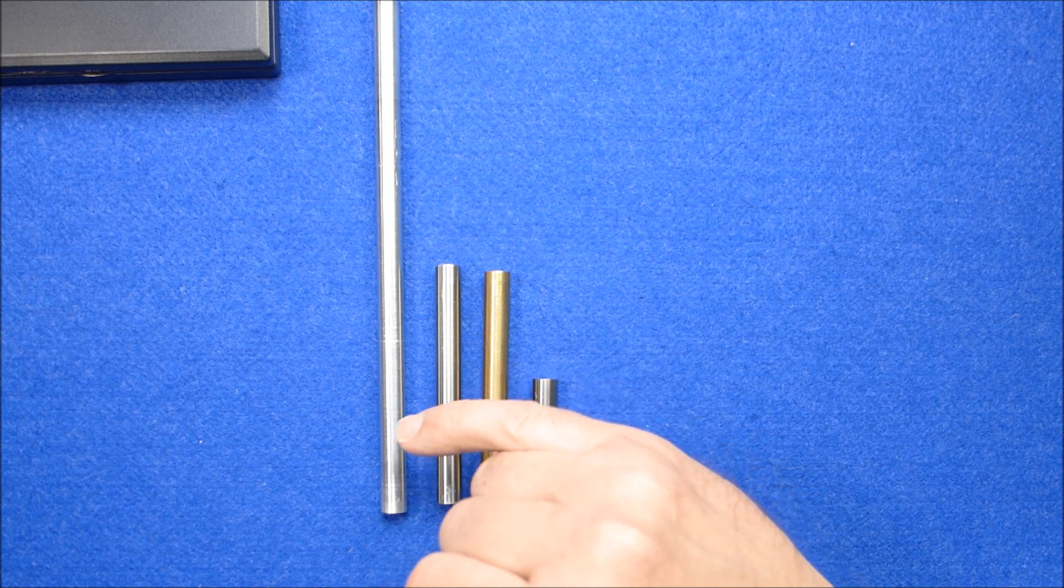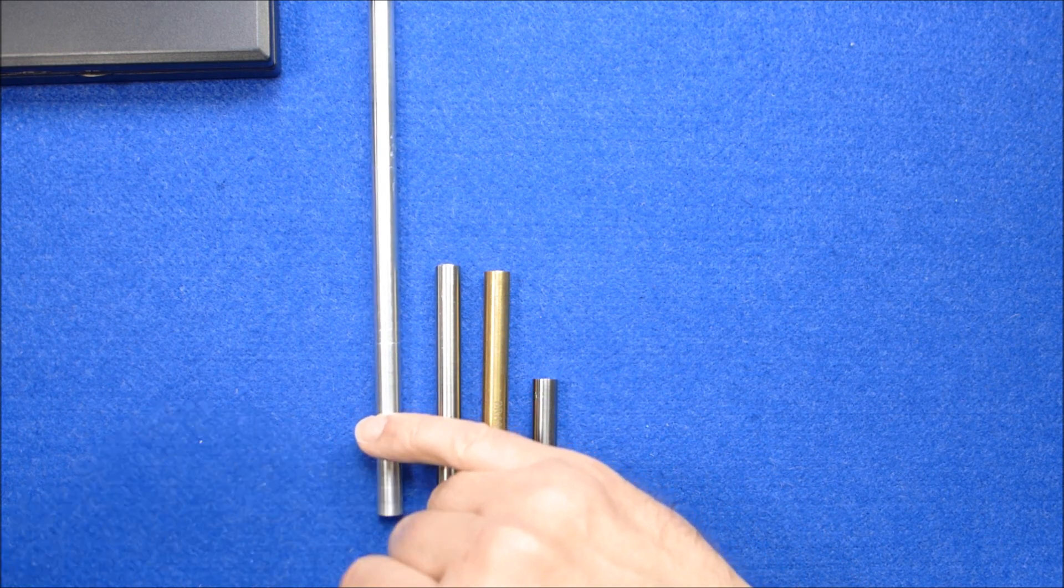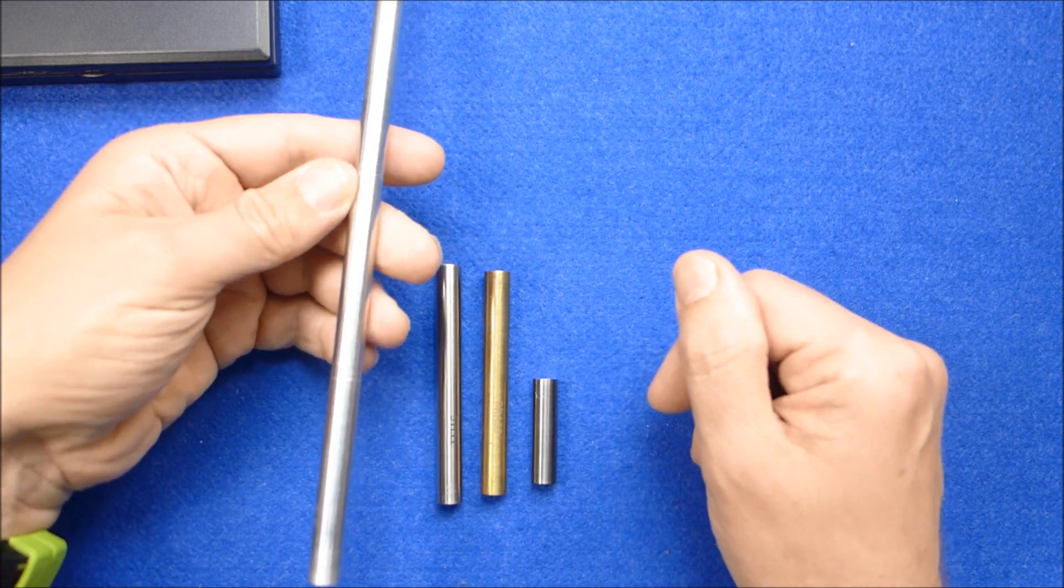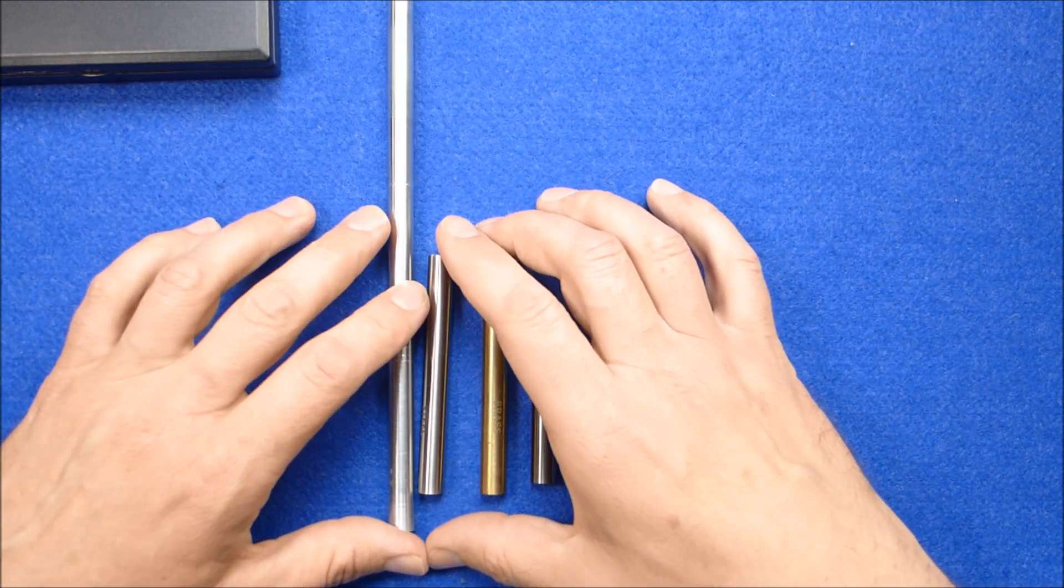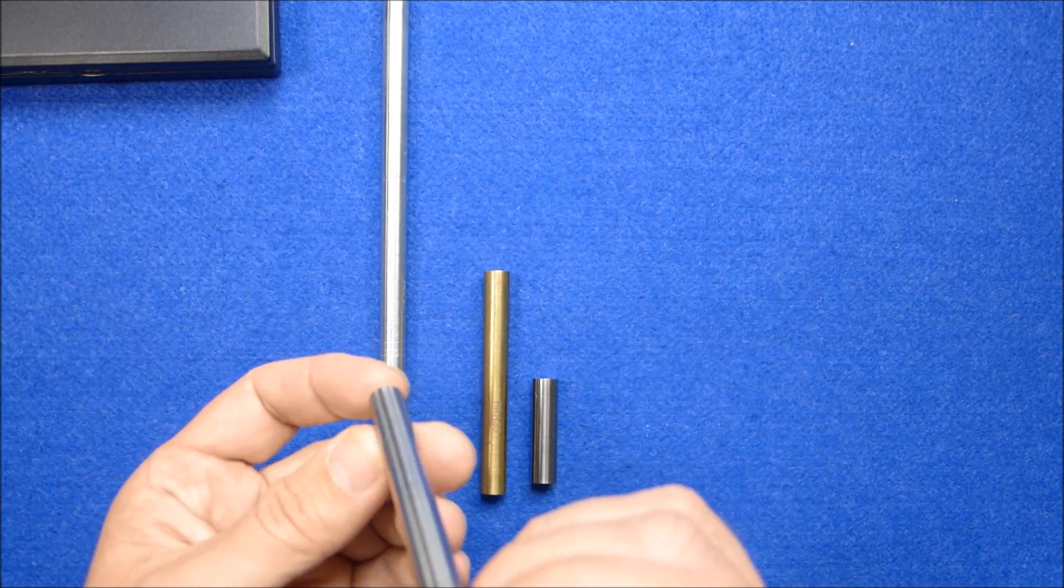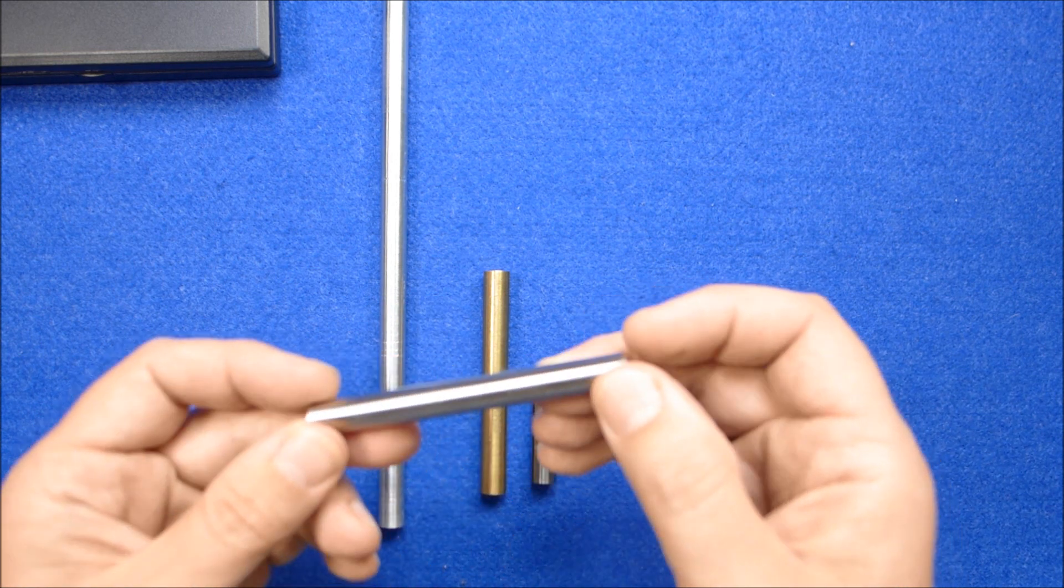As surprising as it may sound, there have been some darts made out of aluminum. I have some old vintage darts that are made from aluminum, or aluminium as our American cousins like to call it.